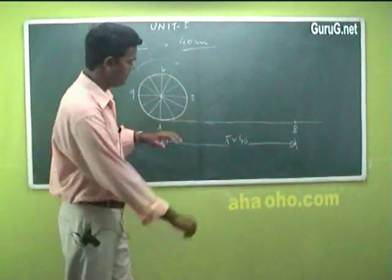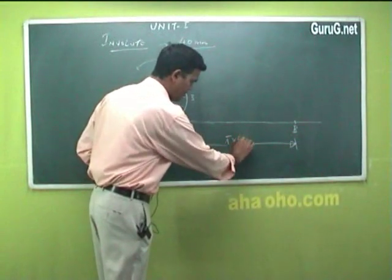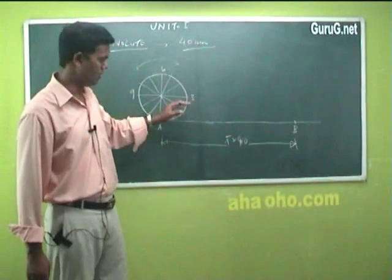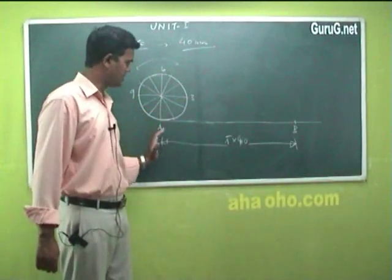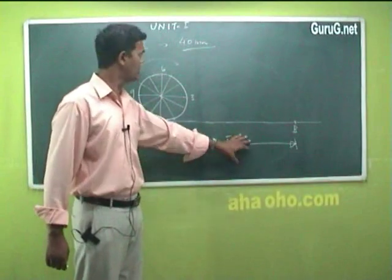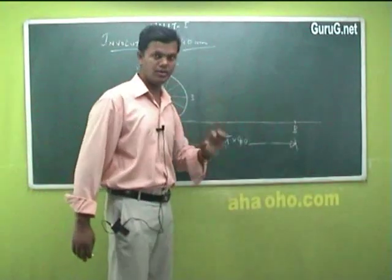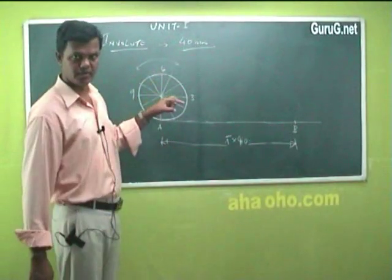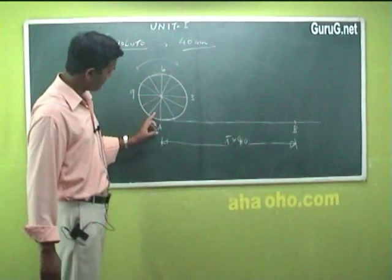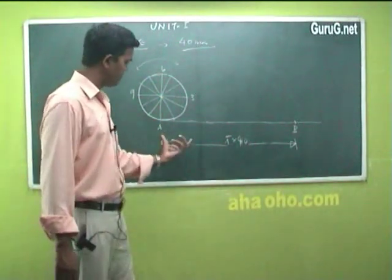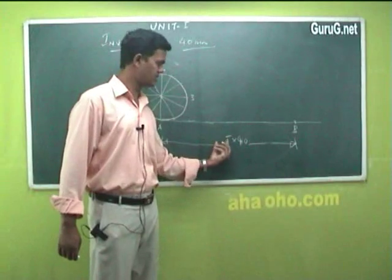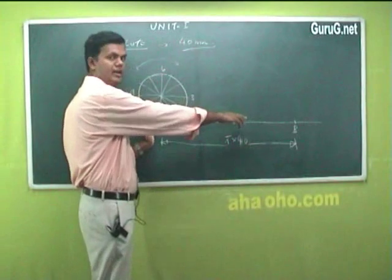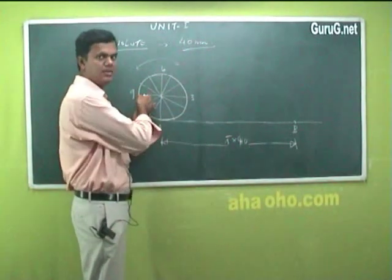This is the same as what was done for the cycloid — we multiplied the circumference value by the given diameter value to get the baseline length. Now to draw the involute curve, once you find the total value of this base line which is the circumference of the circle, kindly divide this length of the line into the same number of equal divisions as the circle.